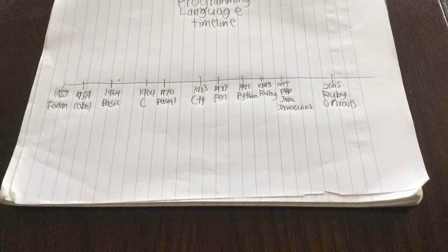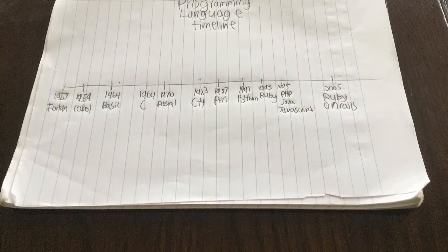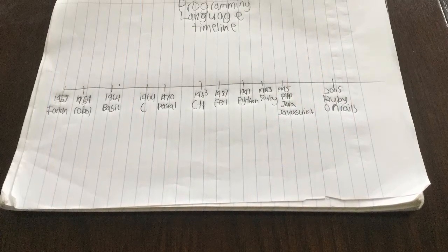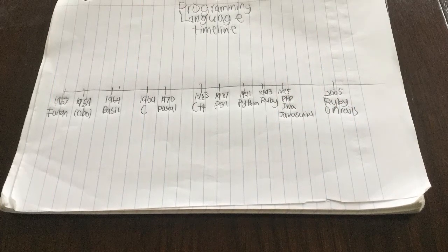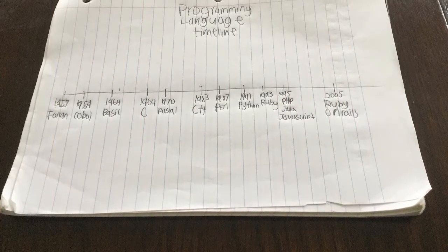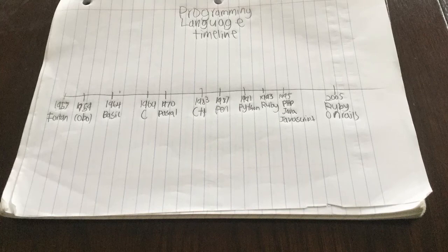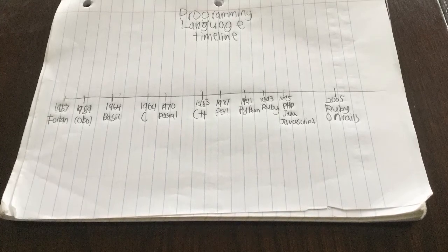Programming language timeline. In 1957, FORTRAN was created. In 1959, COBOL was created. In 1964, BASIC was created. In 1969, C was created.